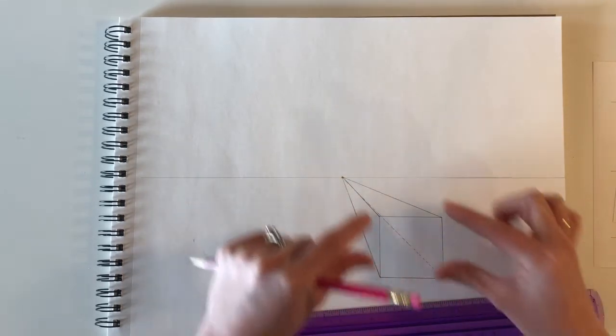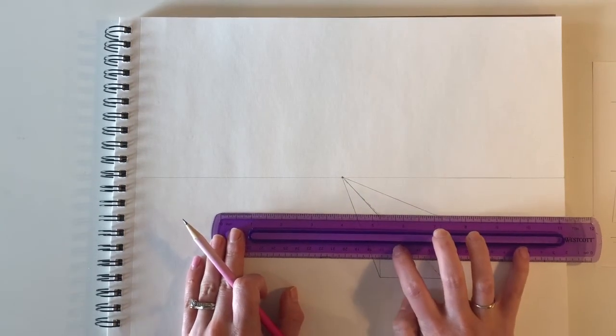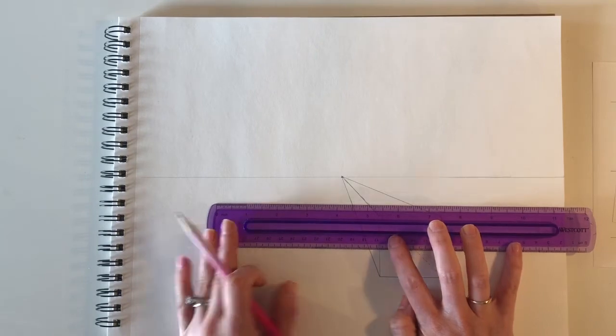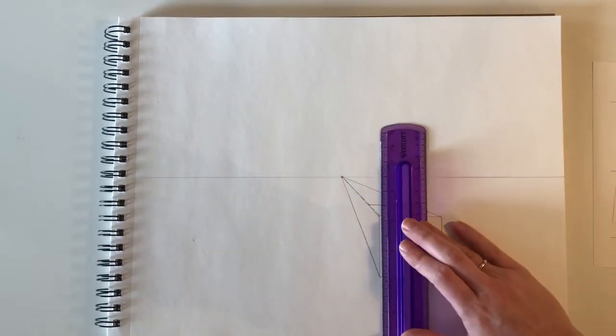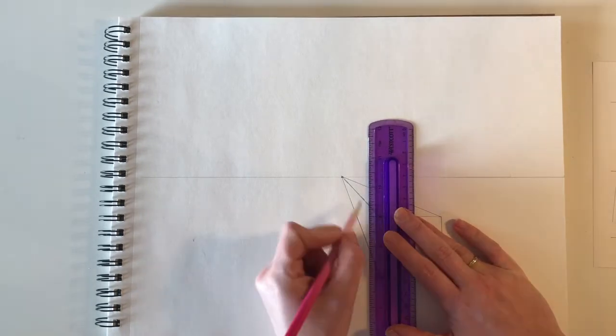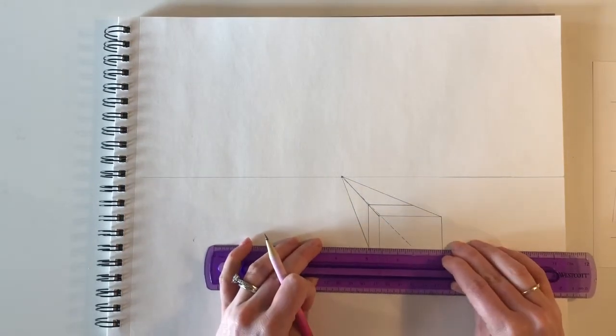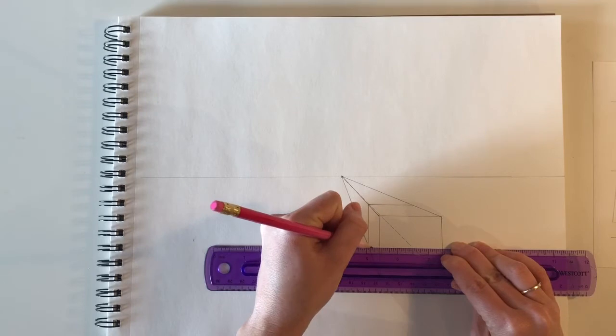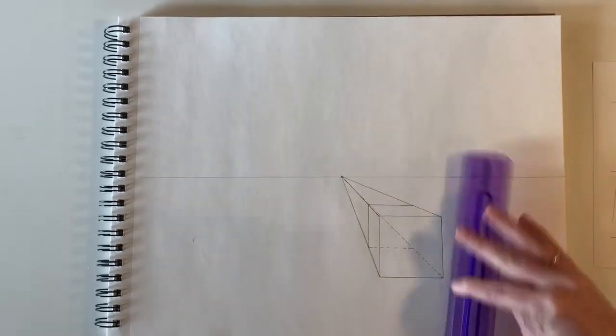I'm going to take this front horizontal for the top and slide it back, making sure it's horizontal. This front vertical I'm going to slide back. This bottom horizontal I'm going to slide back, and since it's going through the cube, that one will be dotted.